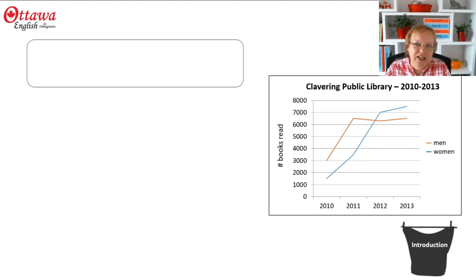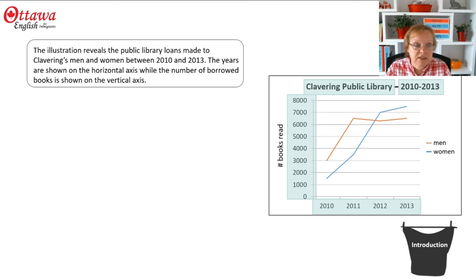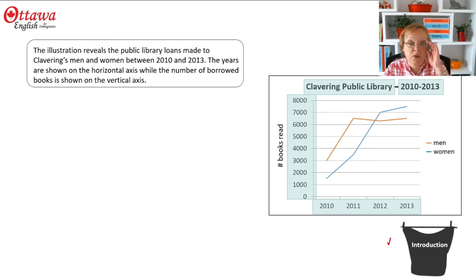Let's start by looking at the introduction. Essentially, we're looking at the periphery of the table. We know that it's Clavering public library, we know the years. Along the horizontal axis we've got the years one by one, and on the vertical axis we've got the number of books that these people read. So we need to pull that content together in our introduction: 'The illustration reveals the public library loans made to Clavering's men and women between 2010 and 2013. The years are shown on the horizontal axis, while the number of borrowed books is shown on the vertical axis.' You're really just looking at the periphery — not the actual lines at this point.